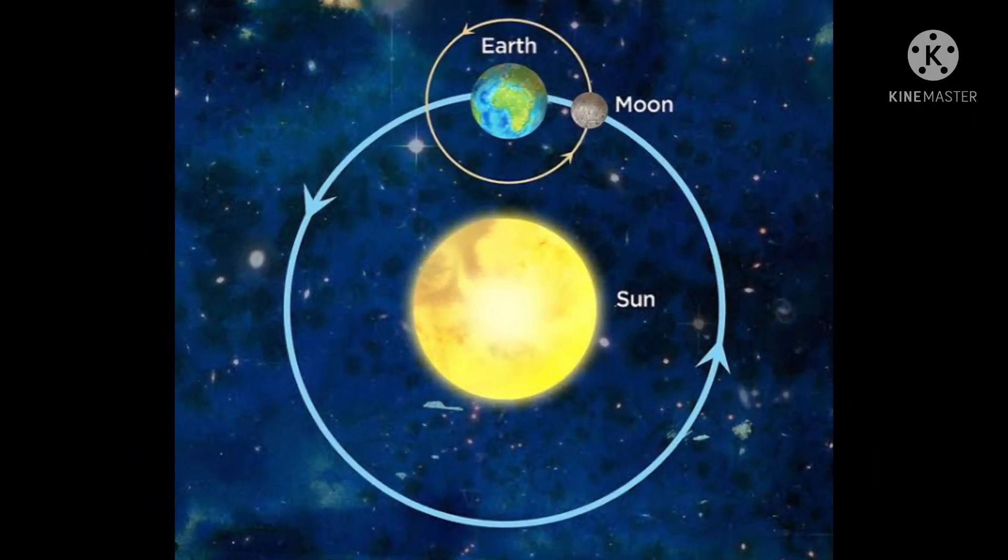You know, gravity is the main reason for the moon to rotate around Earth, the Earth to rotate around the Sun.